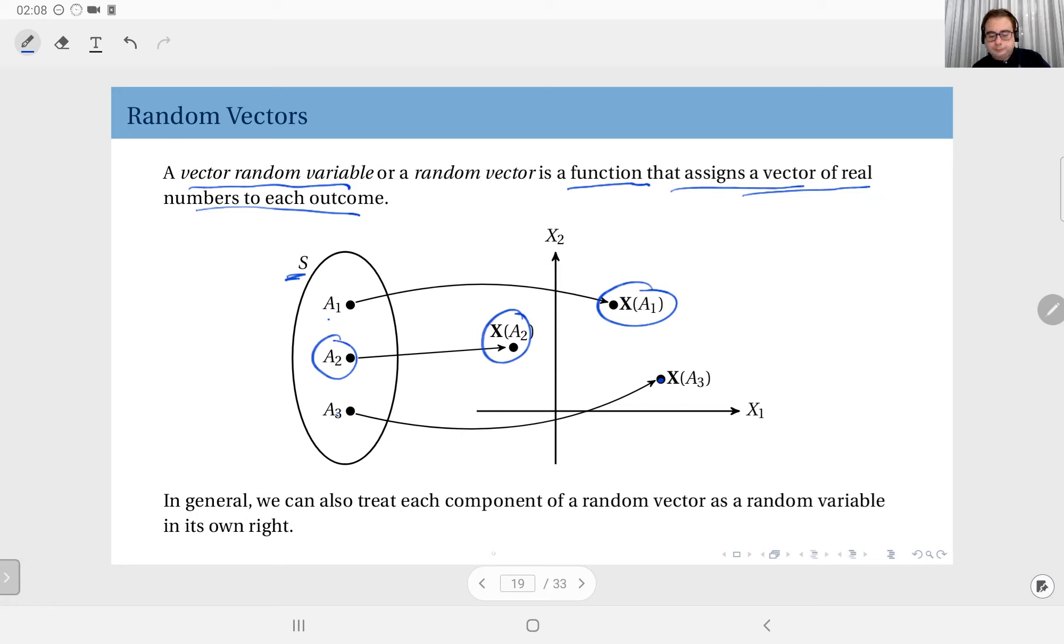So instead of mapping outcomes to single real values, we map them to a real vector. That is one way to look at random vectors: the assignment of real vectors to each outcome. Another approach would be that a random vector is just a vector whose components are individual random variables. That's also a legitimate approach.